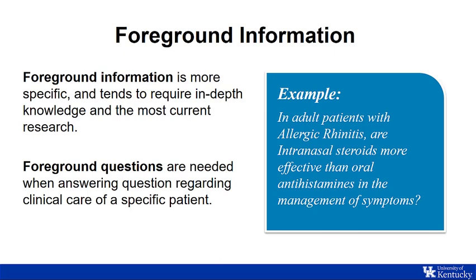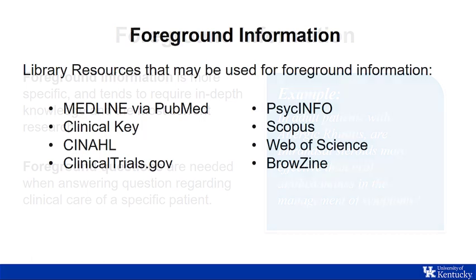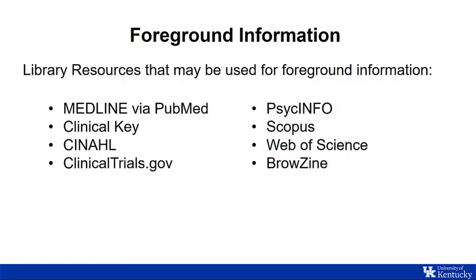Foreground information is more specific and tends to require in-depth knowledge and the most current research. Foreground questions are needed when answering questions regarding clinical care of a specific patient. When you have the background information you need about your topic, it is time to consult foreground sources. These are the questions that generally require a search of the primary medical literature and are best suited for the PICO format. An example is the question used earlier: In adult patients with allergic rhinitis, are intranasal steroids more effective than oral antihistamines in the management of symptoms? These library resources will be useful when searching for foreground information.